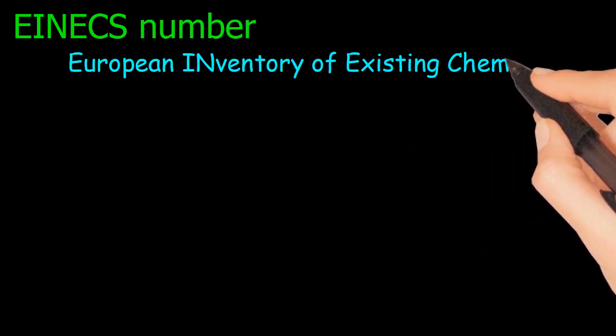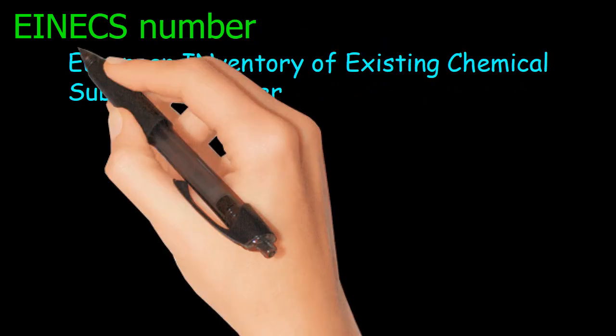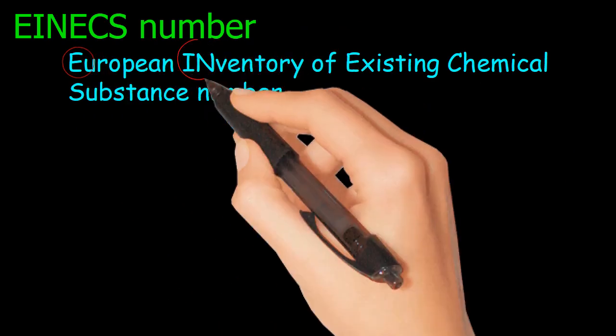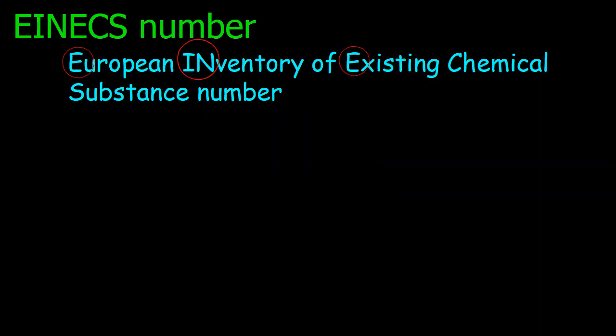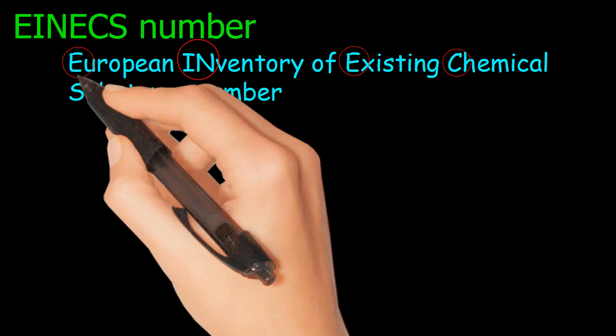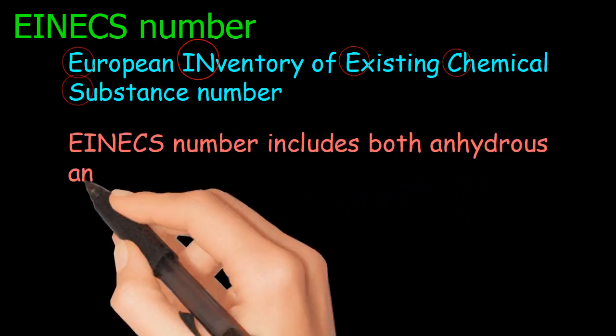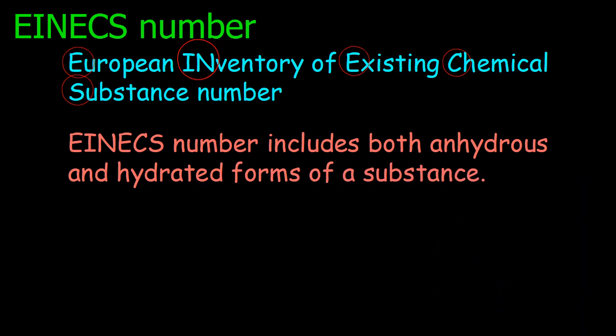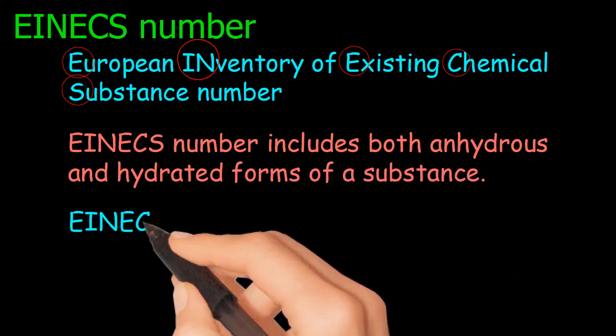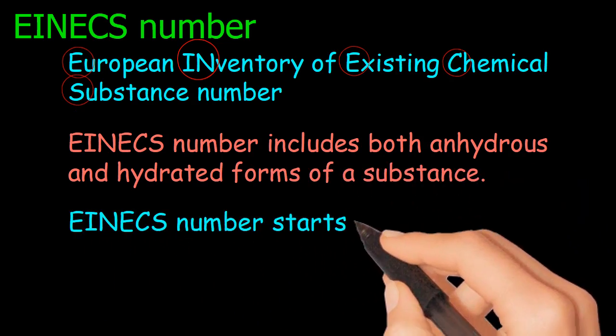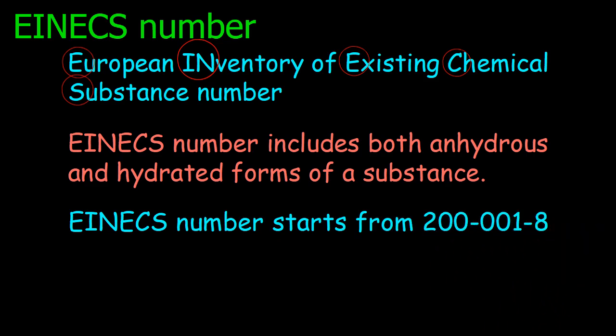EINECS number: European Inventory of Existing Chemical Substance number. EINECS number includes both anhydrous and hydrated forms of a substance. EINECS number starts from 200-001-8.